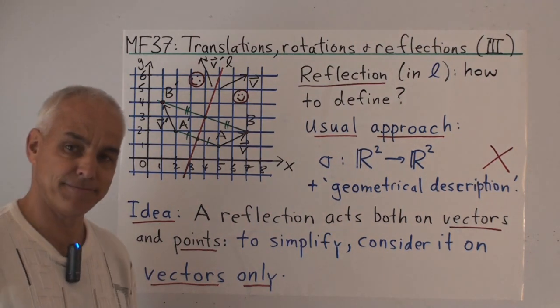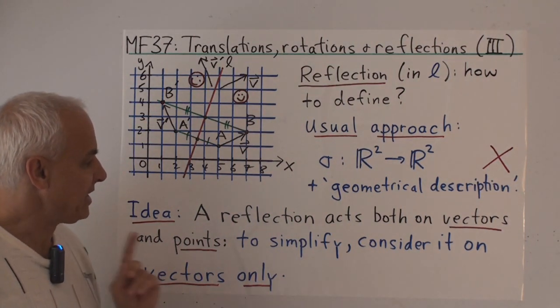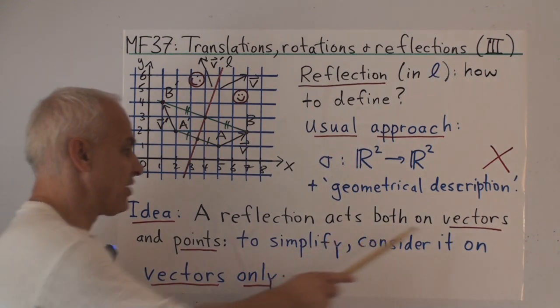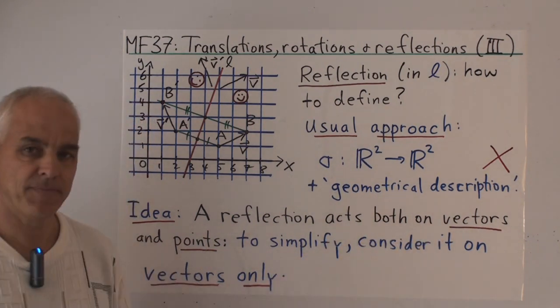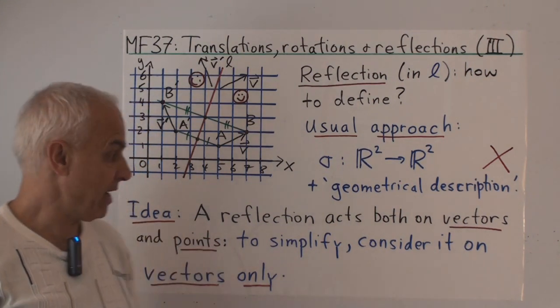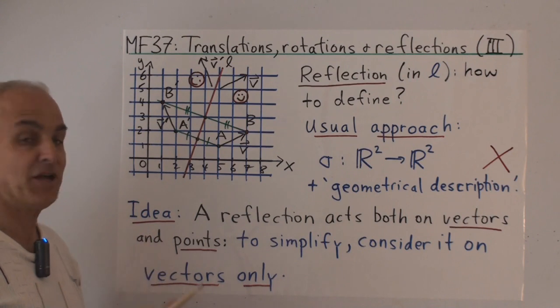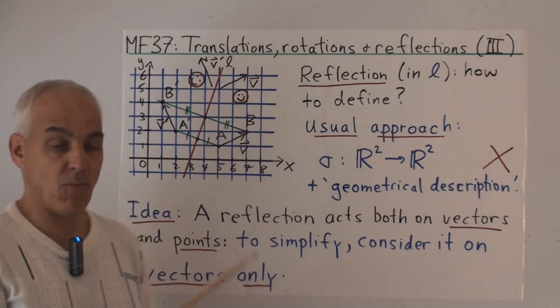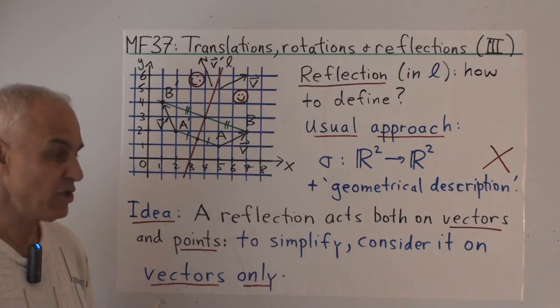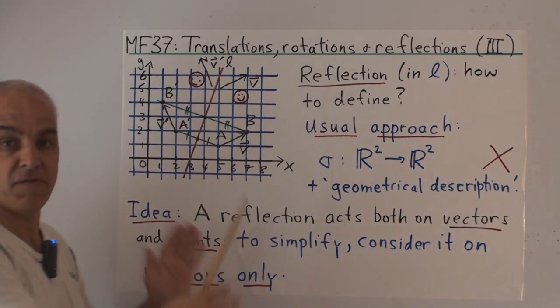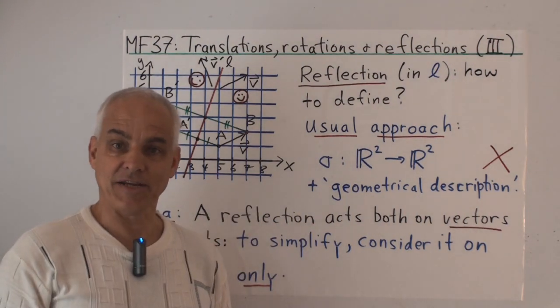So how are we going to do that? Well, the idea is to simplify the issue by concentrating on vectors rather than on points. Reflections act on vectors in a unique and well-defined way, and it turns out to be simpler to think about what it does on vectors rather than what it does on points. So we have to turn our attention from the grid plane that we're picturing here to the vector plane where we're representing vectors.